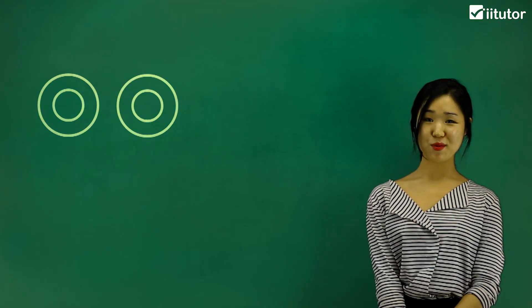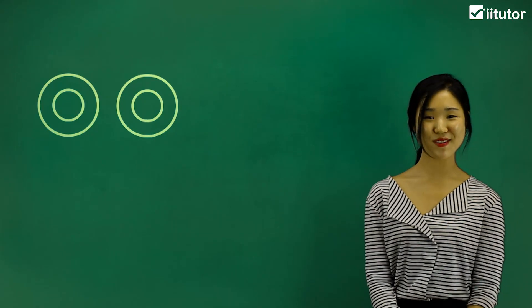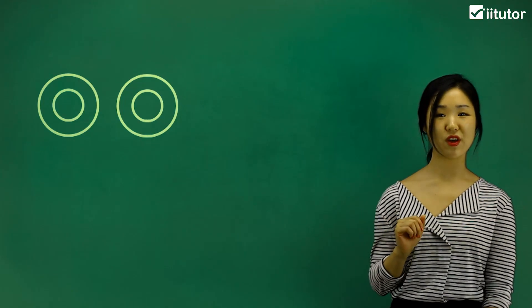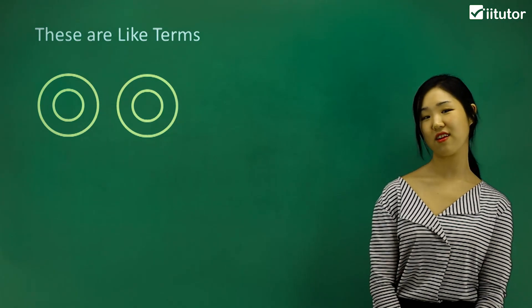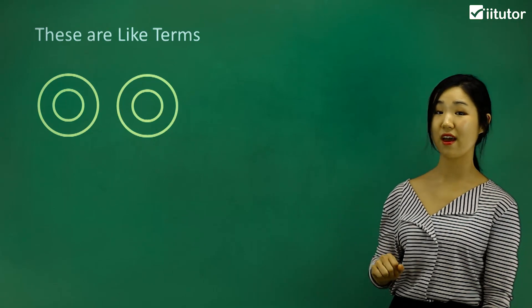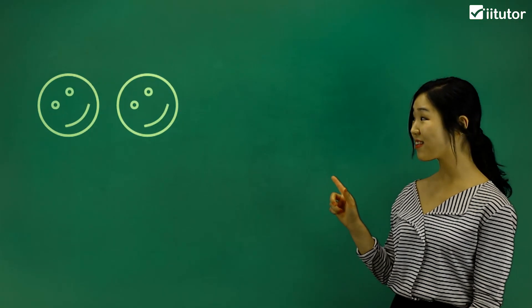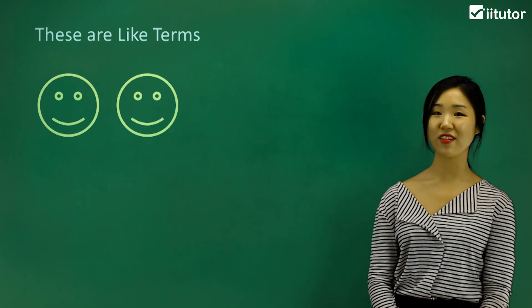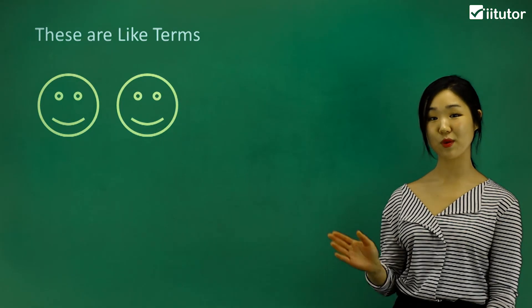I'll give you some simple examples so you get a better idea of what like terms are. If you have a look at the board, we've got two circular balls that look identical to each other, so we can call them like terms. And these two circular faces are also like terms — they both look identical, so we call them like terms.